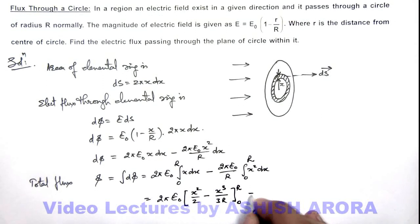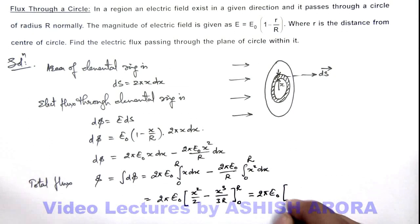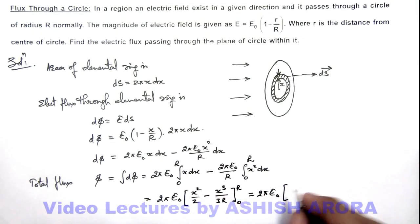On further simplifying by substituting the limits I am getting 2πE₀[R²/2 - R²/3].